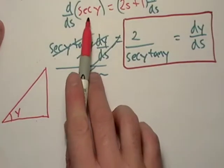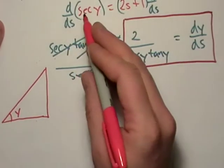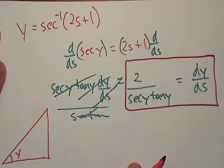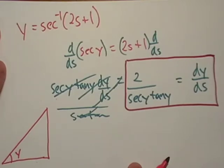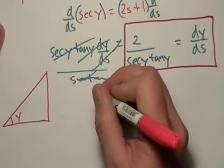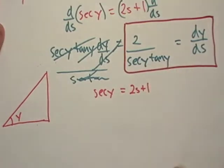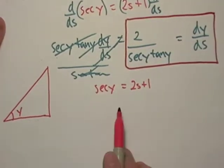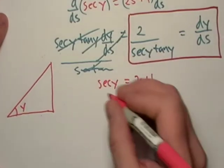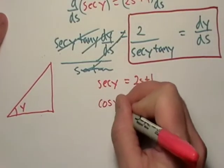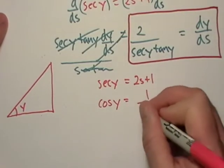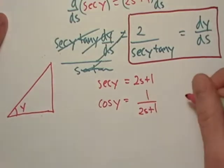Well, originally, we found out that by the original problem, y equals inverse secant. That basically told us that secant of y was equal to 2s plus 1, right? You know, I mean, we use that to solve the problem. So, if that's true, then cosine of y is equal to 1 over 2s plus 1, right?